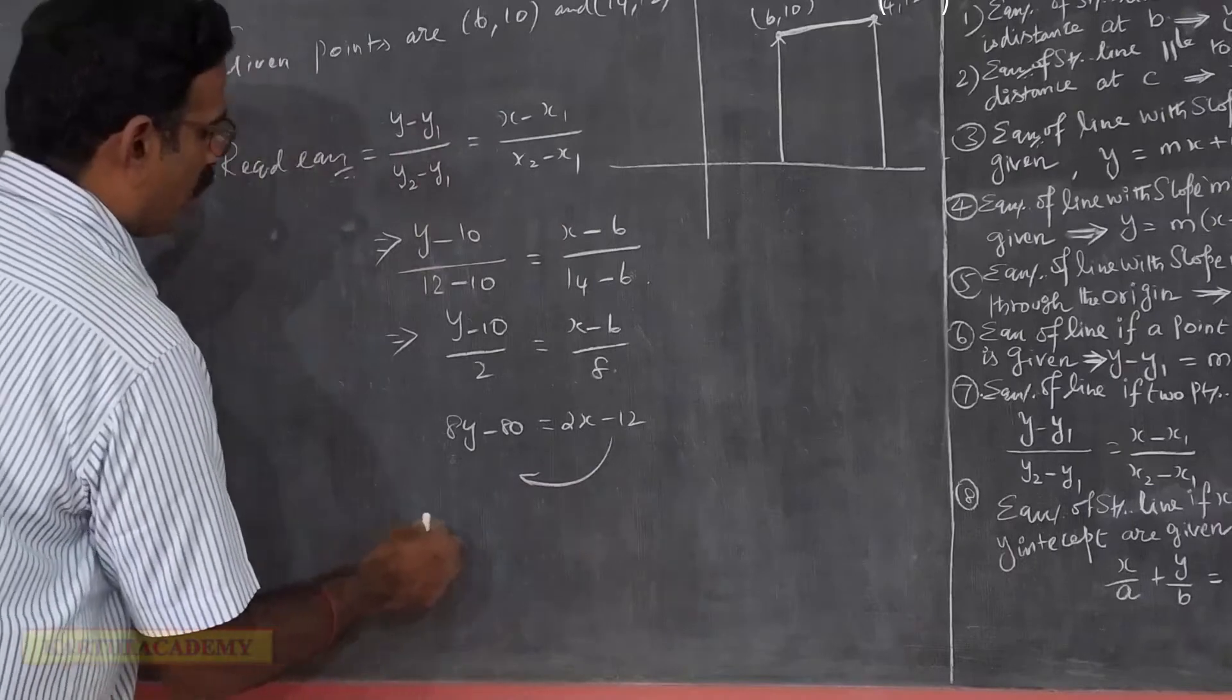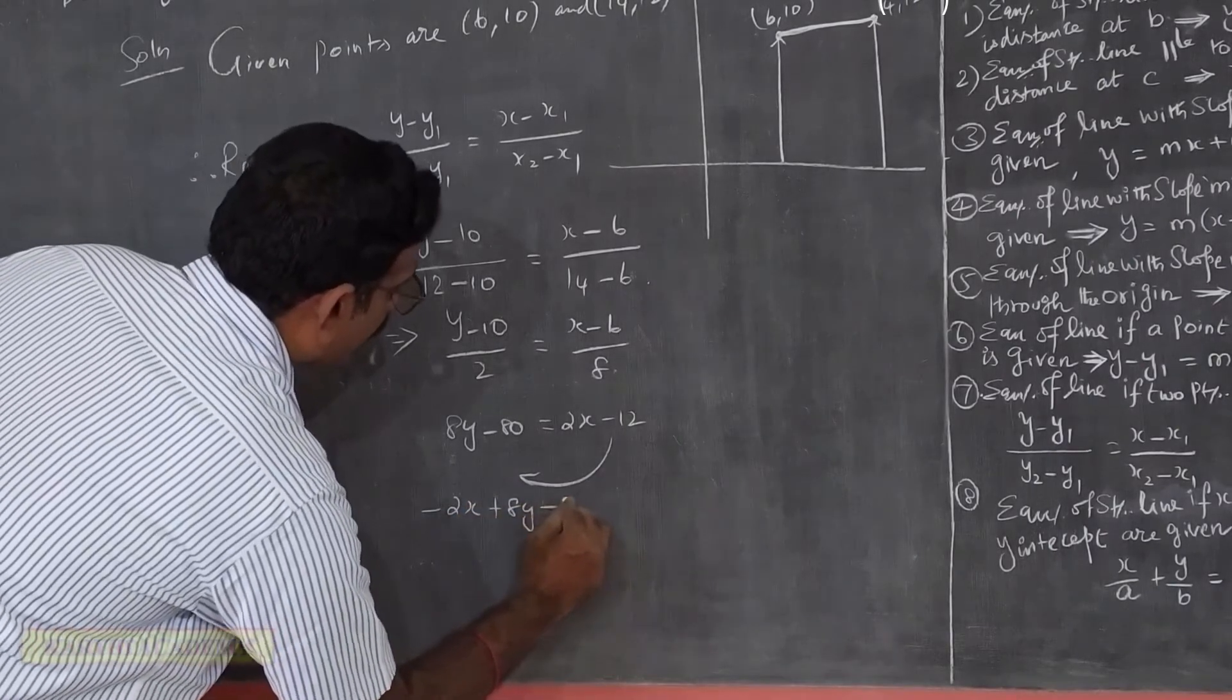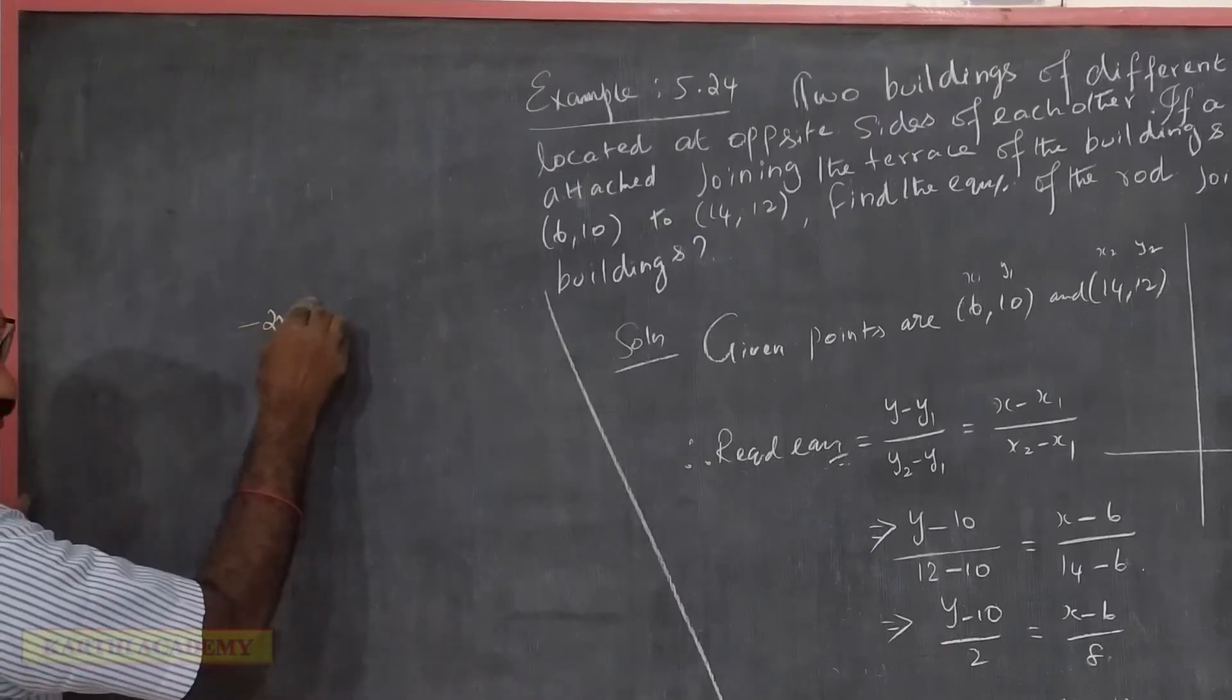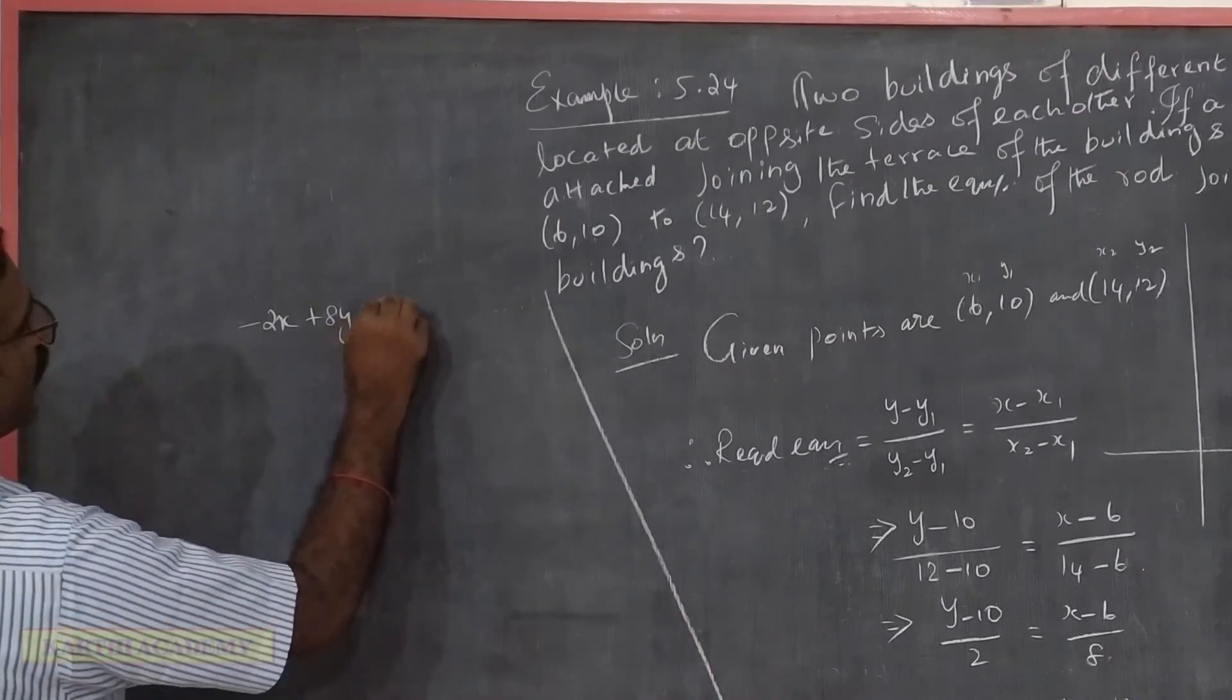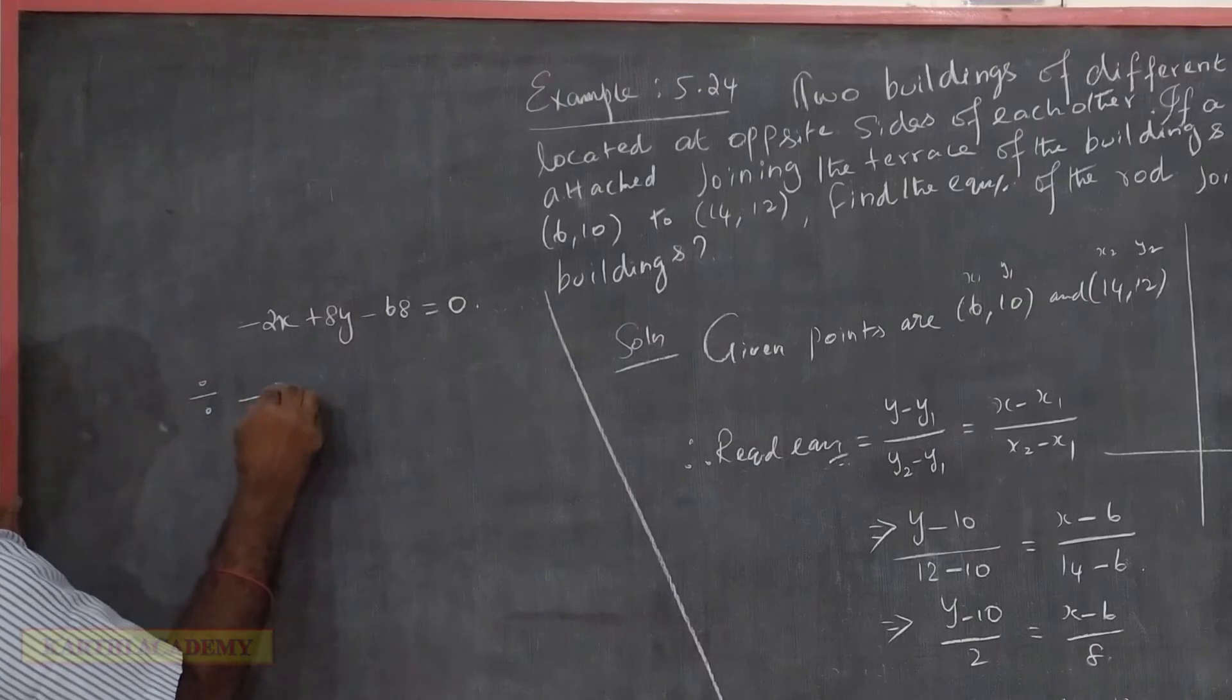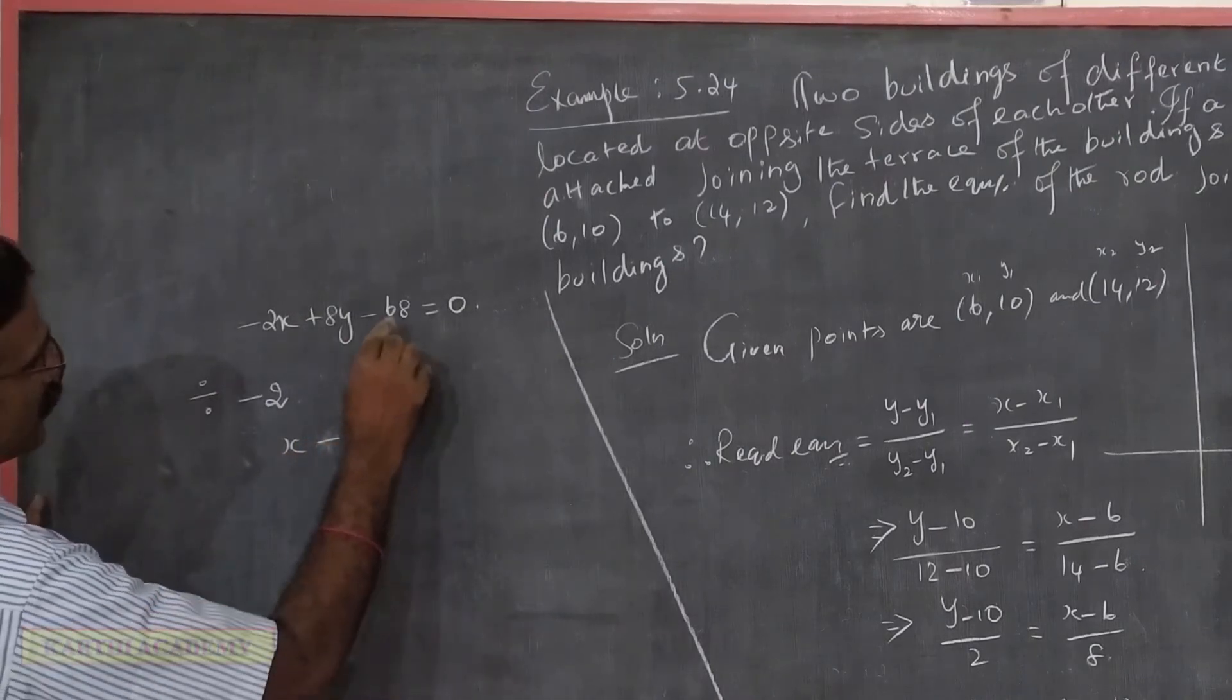This equals 0. Now, minus 2x plus 8y minus 18 equals 0. Simplifying, this equals 0.